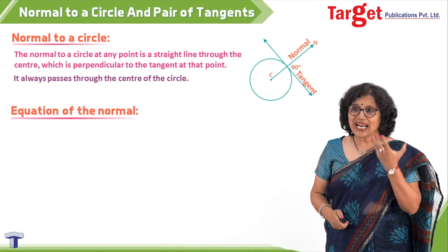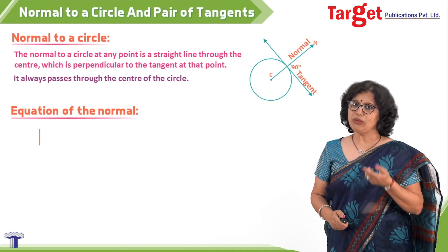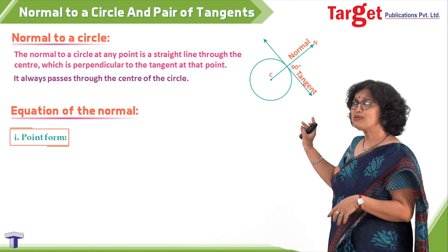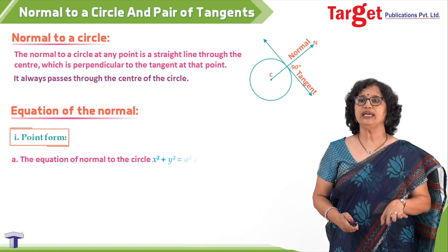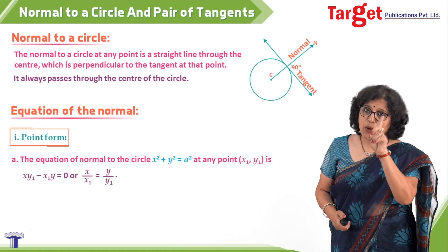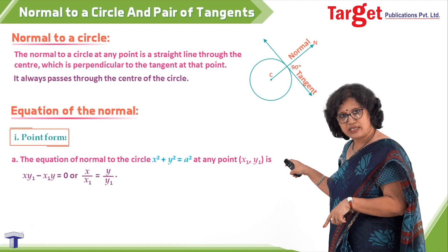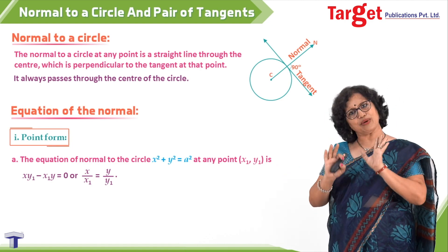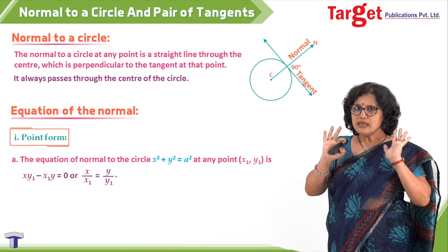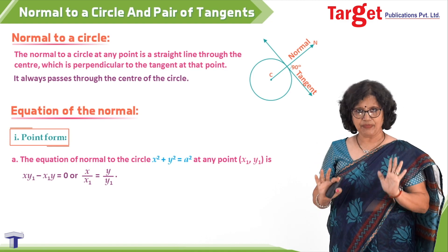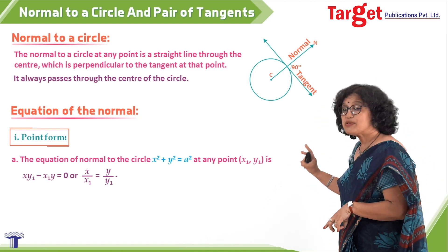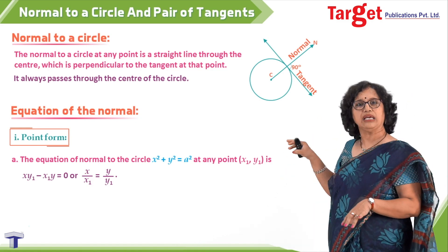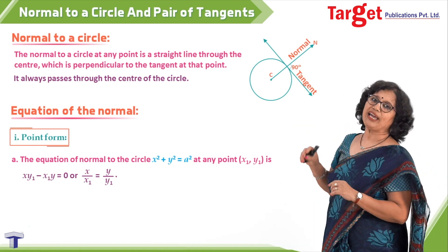To get the equation of the normal, the point at which the normal is drawn must be known. Starting with point form: the point is x1, y1 and the circle's equation is x² + y² = a². Taking this standard simple equation, the equation of the normal is x/x1 = y/y1.